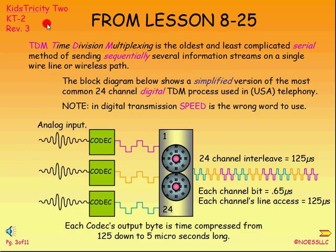This is from KT2 lesson number 8, page 25. Time division mux is the oldest and least complicated serial or sequential way of putting multiple input streams onto a single output path. That's what a mux does — it puts many things onto one thing. In this example, I'm showing you a telephone system, one of the oldest ones there is in digital time division multiplexing.